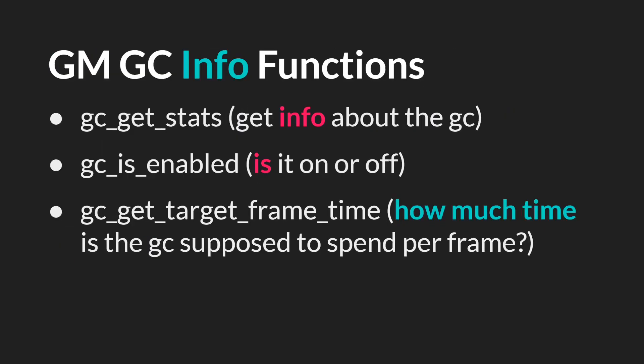But if you want to, here's what GameMaker allows you to do. First, it has a couple of functions that get you info: GC get stat, GC is enabled, and GC get target frame time. These are pretty self-explanatory, and you can read more about them in the manual.